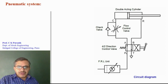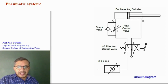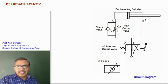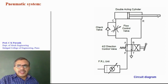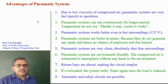In the first position of the 4x2 direction control valve, compressed air flows from P to A and B to T, and the cylinder extends. In the second position, air flows from P to B and A to T, and hence the cylinder retracts. The flow control valve controls the flow during extension, so the cylinder extends slowly. The check valve allows free flow during retraction, so retraction speed is not controlled and the cylinder retracts with higher speed.